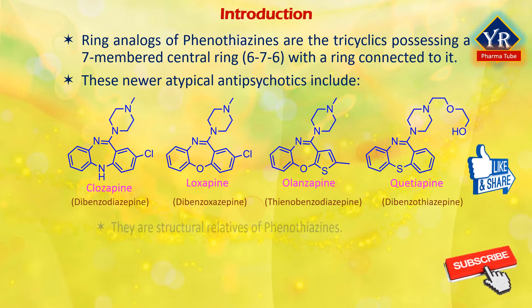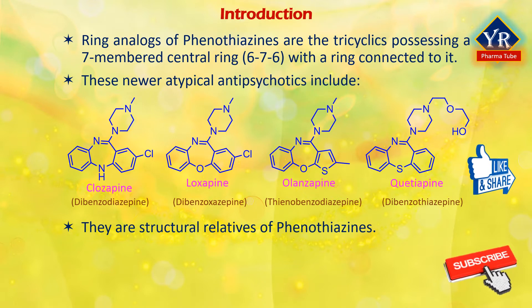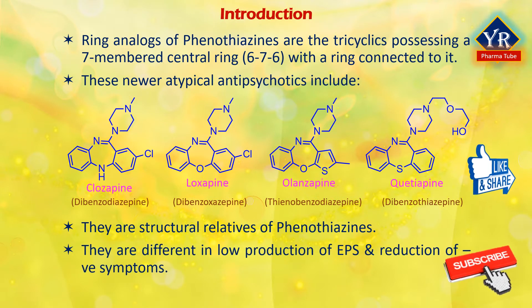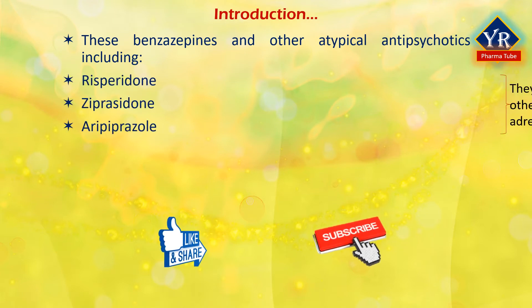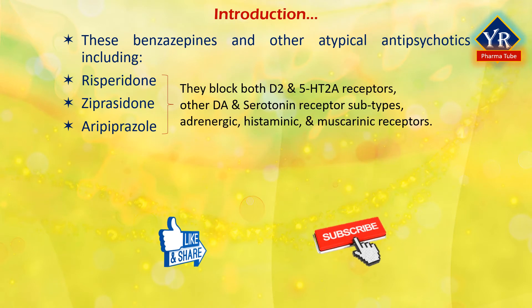These ring analogues of phenothiazines are structural relatives of phenothiazines. Therefore, most of them share many chemical properties with the phenothiazines. However, they have some important differences, notably low production of extrapyramidal symptoms and reduction of negative symptoms. These dibenzodiazepines and other atypical antipsychotics including risperidone, ziprasidone, and aripiprazole block both dopamine D2 and 5-hydroxytryptamine-2A receptors.